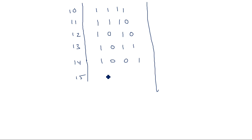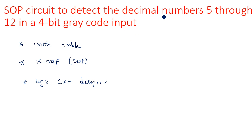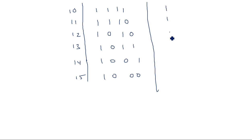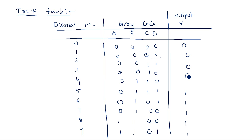If you observe, all successive bits are varying with a variation of only one bit — that is the meaning of Gray code. According to the given question we need to identify the numbers from 5 to 12. From 5 to 12, all the output bits are ones and remaining are zeros. So the output Y is 1 for decimals 5 through 12, and 0 for all remaining cases.